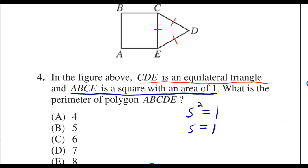In the figure above, CDE is an equilateral triangle, and ABCE is a square with an area of 1. What is the perimeter of polygon ABCDE?